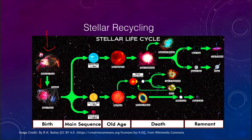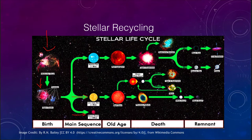Brown dwarfs form very low-mass objects and will essentially stay unchanged for the rest of the history of the universe — locking up all of that material. Low-mass stars like our Sun will go through their lives, form a red giant star at the end of their life, eject a planetary nebula — sending material back out into space — and then end up as a white dwarf and finally a black dwarf star. The material that ends up in the white dwarf is trapped and not ejected back, but the planetary nebula material would be.